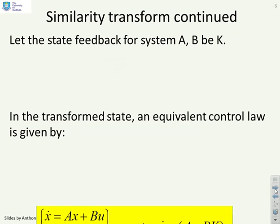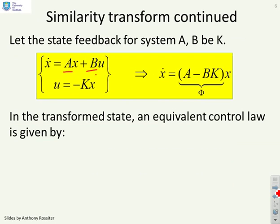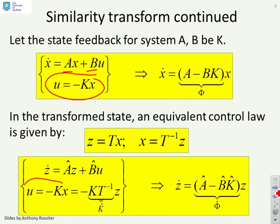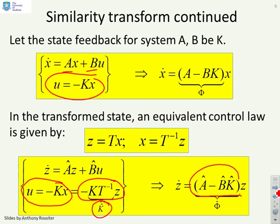Now let the state feedback for a system A and B be K. In the transformed state we have a slightly different control law because we feed back z instead of x. If your feedback law was u = -Kx, that becomes u = -KT⁻¹z. So we define K̂ = KT⁻¹, and the key point is the closed-loop dynamic is now given by  - B̂K̂.